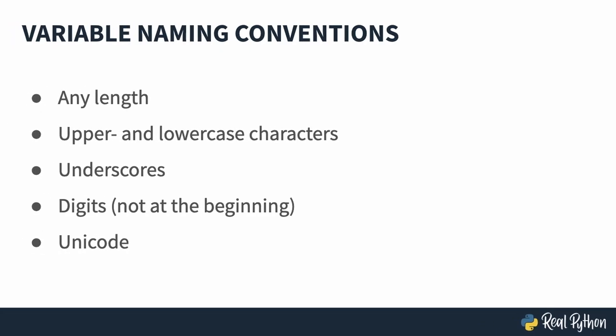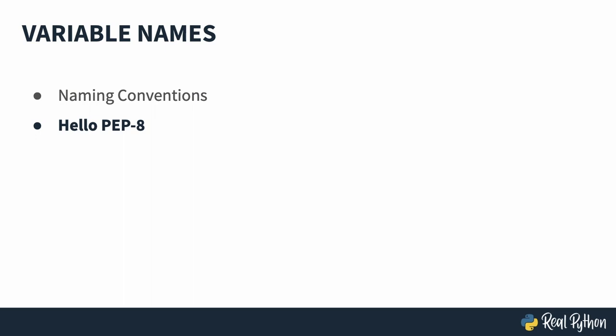So those are the variable name conventions — we just went over them quickly. In the next video, I want to show you PEP8, which is a document where all of these conventions are written down and where you can always go back to check on them. See you there in the next video.